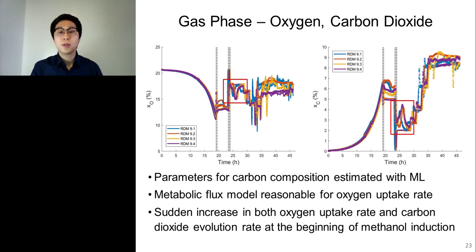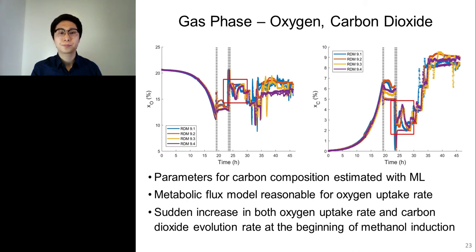For the gas phase, the plots on this slide show the comparison of model predictions with data on off-gas composition of oxygen and carbon dioxide. Parameters for carbon composition were estimated with maximum likelihood method, and estimated values for initial carbon composition during the glycerol period reasonably agree with values from the literature. The off-gas data are well described by the macroscopic model, demonstrating that the metabolic flux model for oxygen uptake rate is a reasonable simplification. However, a sudden increase was observed in both oxygen uptake rate and carbon dioxide evolution rate at the beginning of methanol induction, causing disagreement between model prediction and experimental data. This suggests that actual cell metabolism was more focused on energy metabolism than predicted, possibly due to dramatic changes in cell metabolism during methanol adaptation.